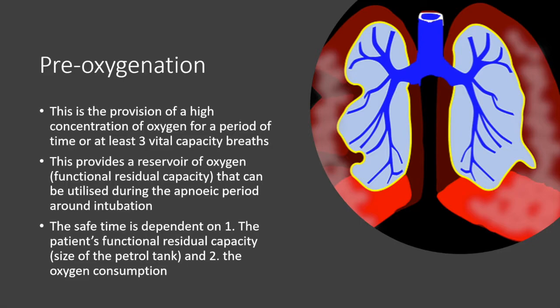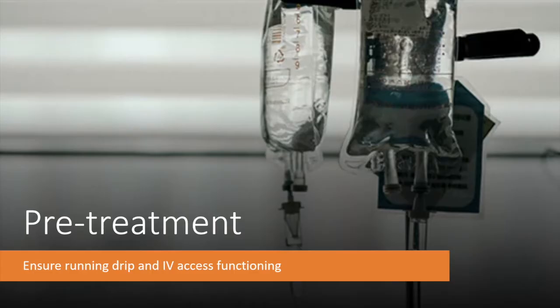There are factors that may reduce the functional residual capacity and so reduce the oxygen storage capacity. This is commonly seen in obese patients, those who are pregnant, those with intra-abdominal pathology, as well as any patient who is supine. Another issue to consider is whether the patient is in a hyper-metabolic state, which may use up more of the stored oxygen per unit time and therefore reduce the time before desaturation occurs. Septic patients are particularly at risk here.